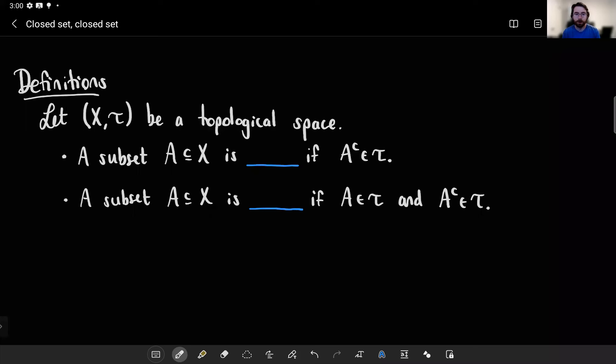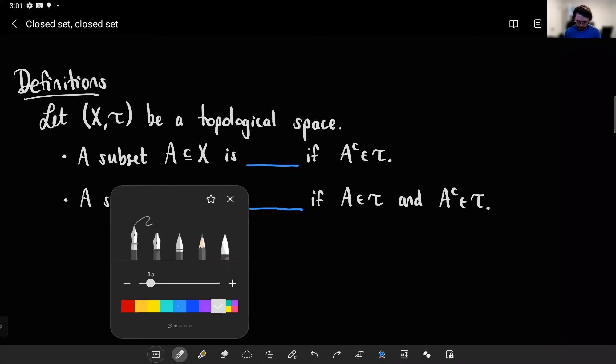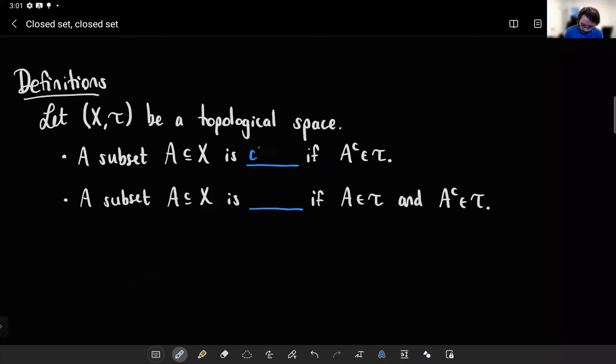Before we move on to learning more topological spaces, I would like to cover some terms to supplement our knowledge of what an open set is. Namely, if we have some set whose complement is open - remember, in tau means you're in the topology, and the topology is the collection of all open sets - well, if your complement is open, what we say is you are closed.